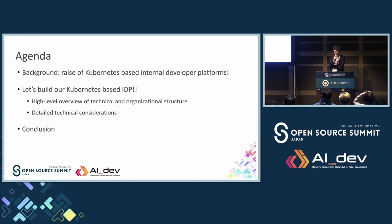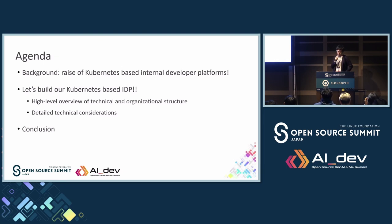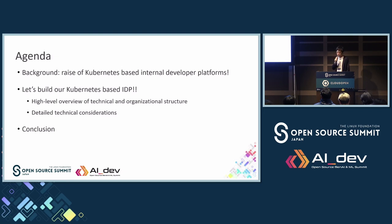Today I'd like to talk to you about building Kubernetes-based platforms for application developers. I've divided my presentation into three sections. First, let me start by giving you some background. Next, we'll dive into building our Kubernetes-based IDP. We'll begin with a high-level overview of the technical and organizational structure. Then we'll move on to discuss some more detailed technical considerations that are important for implementation. And finally, we'll wrap things up with our conclusion and summarizing the key takeaways.